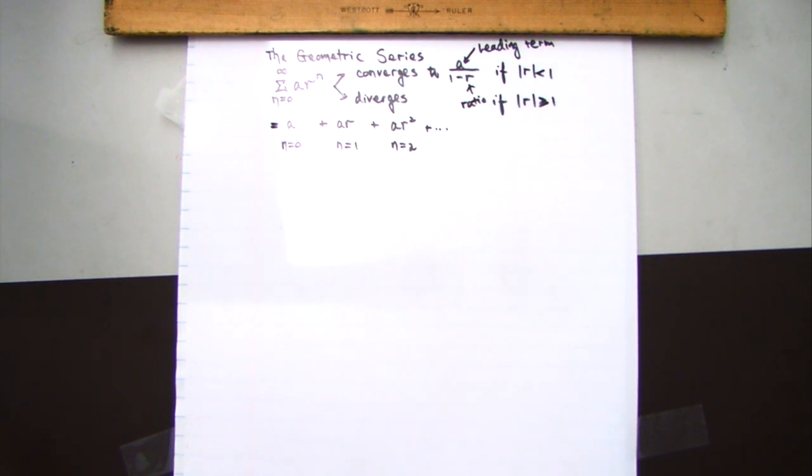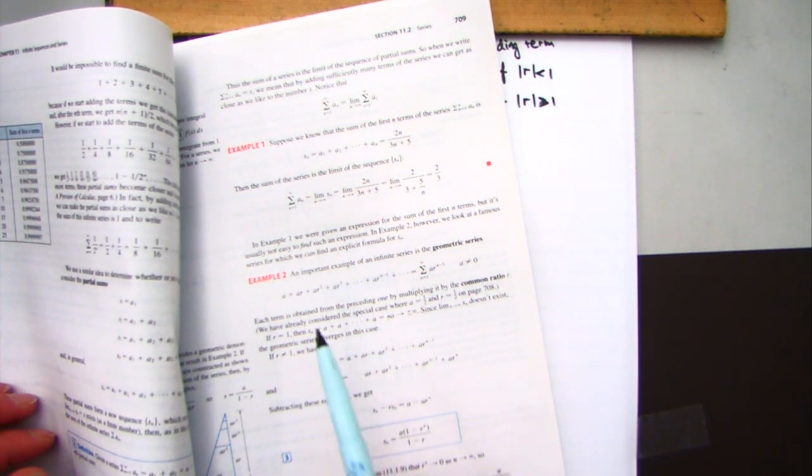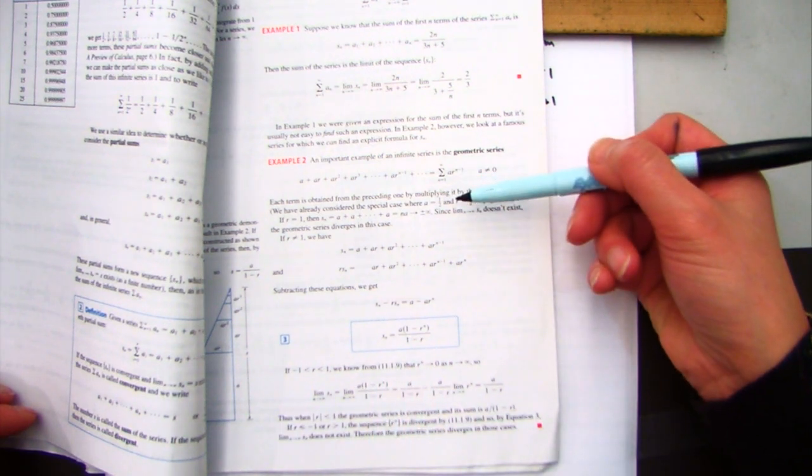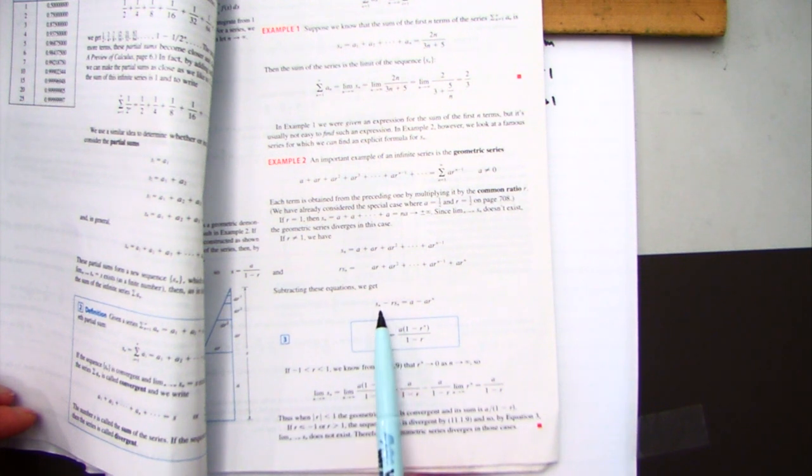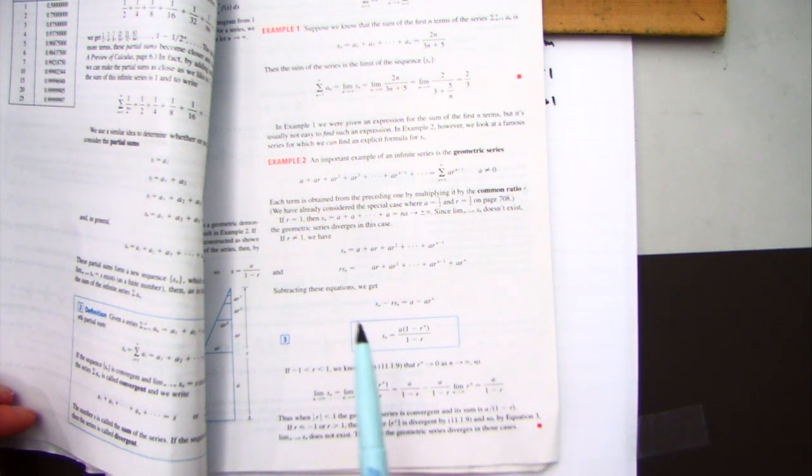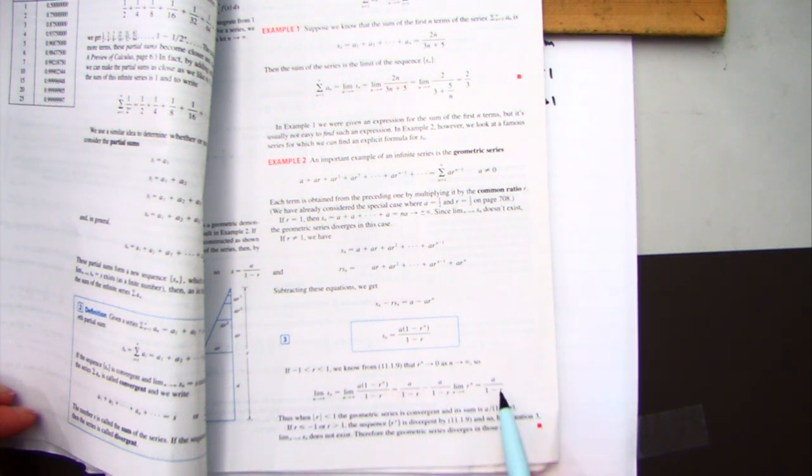Let me bring up the textbook. The standard way of deriving the formula uses the nth partial sum — adding up the first n terms — then taking the limit as n approaches infinity. Let me show you a quick way to derive this.